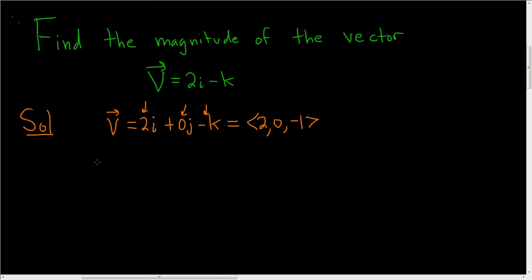And now we can find the magnitude of v using the formula. The formula for the magnitude says that you take the square root and you square all of the components and you add them.